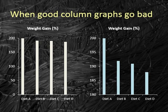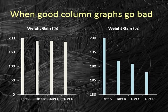Another common pitfall for bar graphs is improper axis setup. These two figures illustrate the exact same data—the figure on the left shows a complete axis from 0 to 200, whereas the figure on the right shows a truncated axis from 180 to 200. Zooming in on the data makes the differences look very dramatic when in actuality they are quite minor. This is a very common mistake people make when trying to make their data look important—it's misleading and should be avoided.